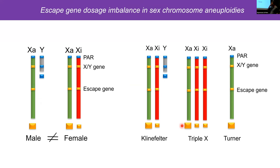In cases of extra X chromosomes — such as in Klinefelter syndrome (XXY in a male) and XXX (extra X in a female) — each extra X chromosome is inactivated. But importantly, escape genes still escape from the extra X chromosome, so there's a greater dosage of escape genes in Klinefelter and XXX individuals compared to normal males and females, and especially compared to Turner syndrome. It's thought that dosage of these escape genes, at least in part, drives sex differences we see between males and females and contributes to phenotypes in sex chromosome aneuploidy.